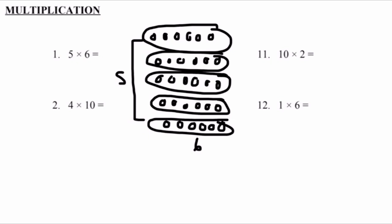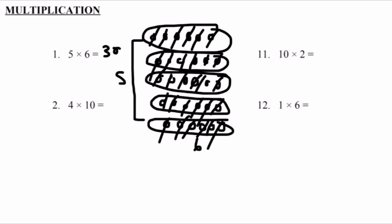Let's add it all together to find our final answer. Counting all the circles across all 5 groups, we count up to 30. 5 times 6 equals 30 because 5 groups of 6 adds up to 30.